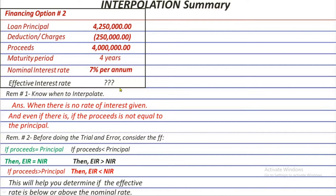As you may remember, we tried a rate higher than seven percent in this problem because the proceeds were lower than the principal. That's reminder number two — use this relationship to determine whether the effective rate is higher or lower than the nominal rate.